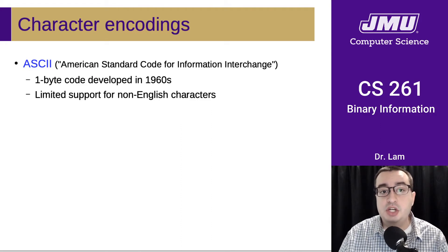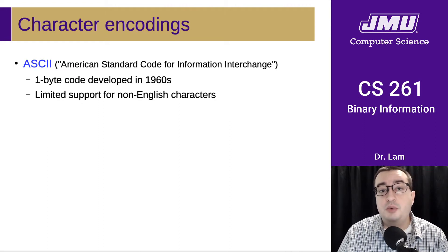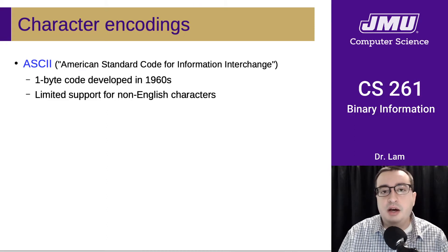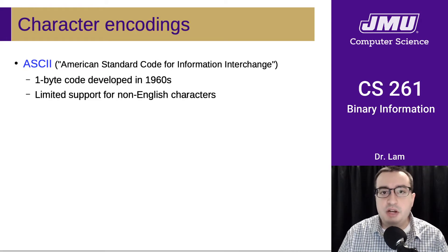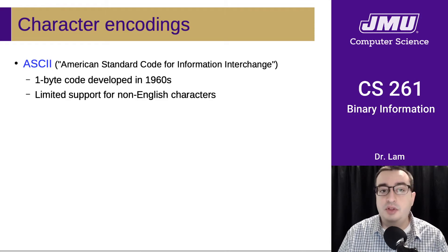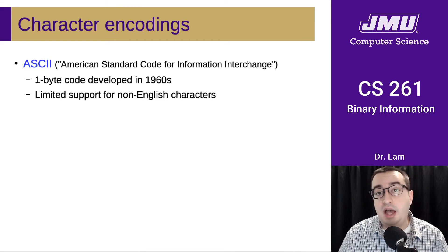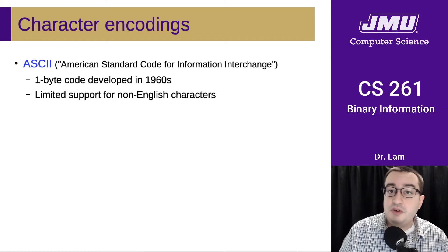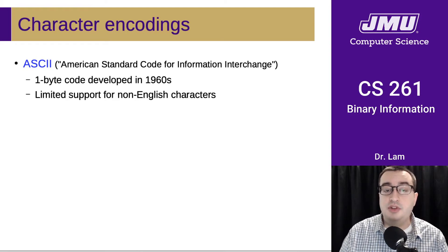One important type of information is textual data — what you're familiar with as a string from Java, and that's the terminology we use in C as well. We need a way to represent text data. The first most widespread format was something called ASCII, which is a one-byte code that was developed in the 1960s. Because it only had one byte per character, there were a maximum of 256 different characters that were representable.